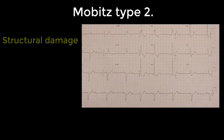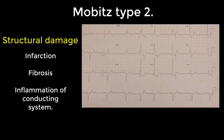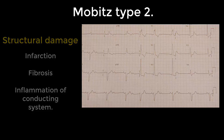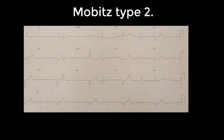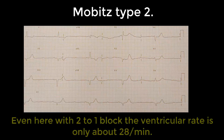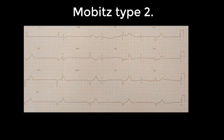So what causes it and is it dangerous? It's usually caused by structural damage — such as infarction, fibrosis, or inflammation — to the conducting system just below the AV node. Unlike Mobitz type one Wenckebach, which is usually reversible, Mobitz type two is far more important clinically in the emergency department. With four to one, five to one, or even six to one blocks, there's a long time without ventricular contraction, and that severe bradycardia can cause hypotension and collapse.